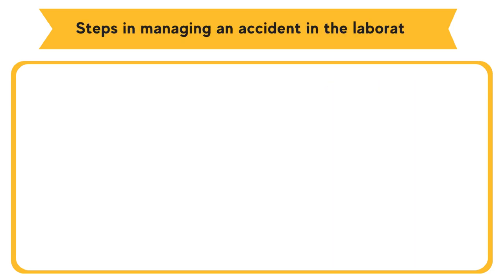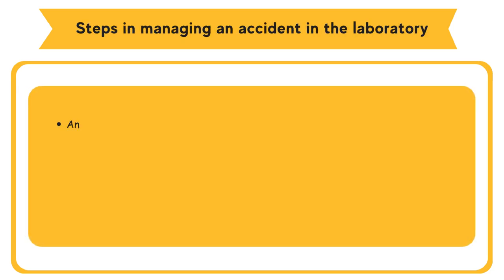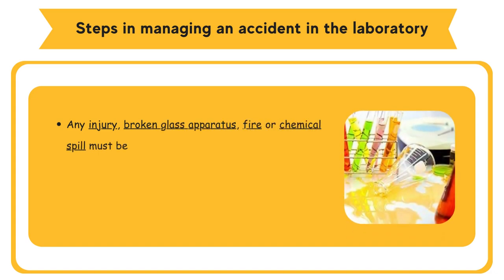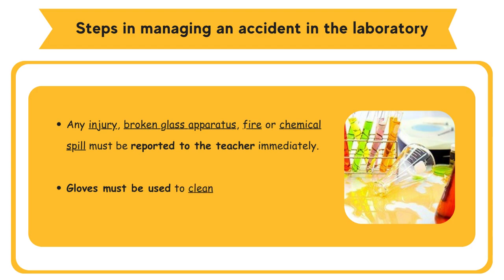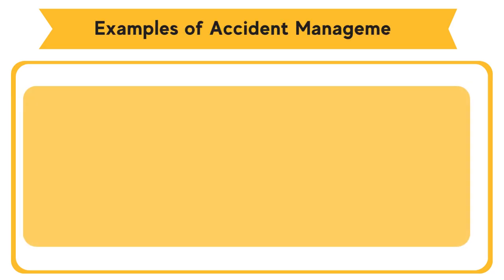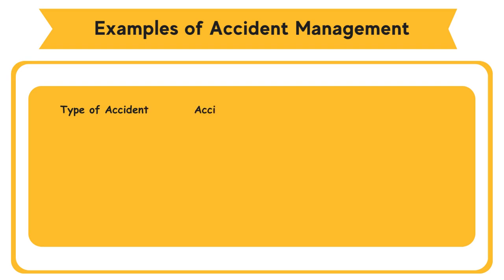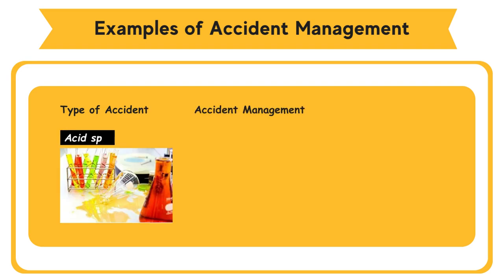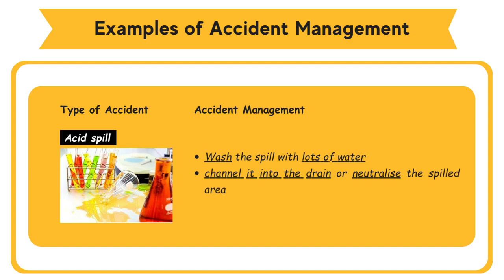Steps in managing an accident in the laboratory. A: Any injury, broken glass apparatus, fire, or chemical spill must be reported to the teacher immediately. B: Gloves must be used to clean up any spill or broken apparatus. For an acid spill: wash the spill with lots of water and channel it into the drain, or neutralize the spilled area with sodium bicarbonate solid or solution, then wash with water.